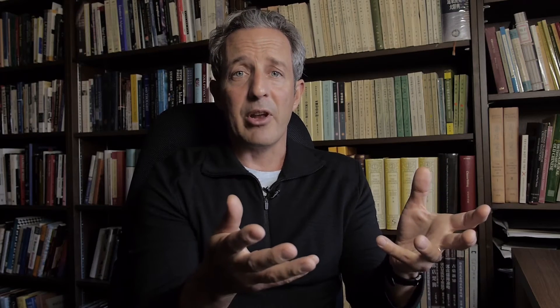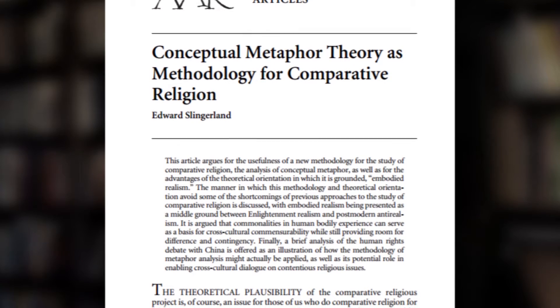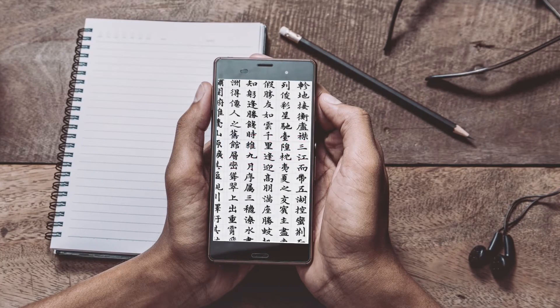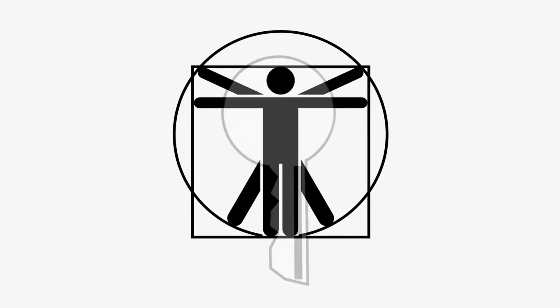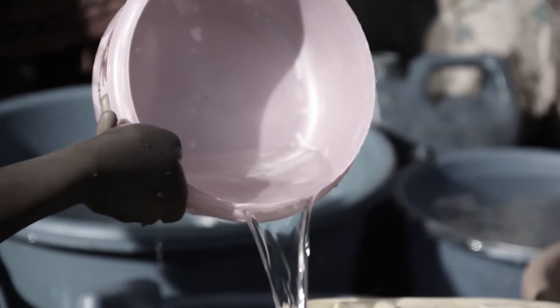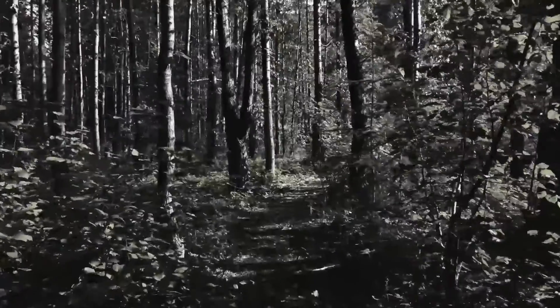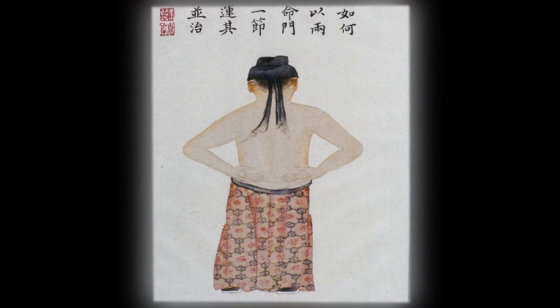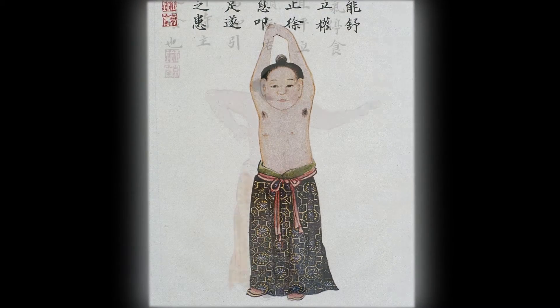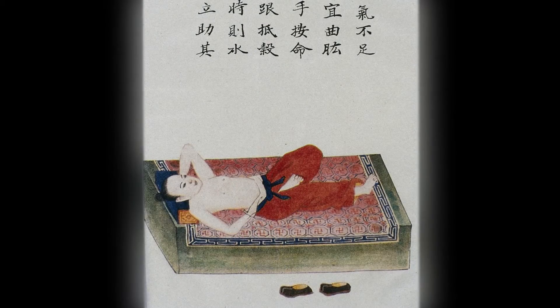I went on to argue that conceptual metaphor theory can be a way to do comparative work in religious studies. As a modern American, I can understand a classical Chinese text written in the 4th century BCE. Conceptual metaphor theory helps explain this: I can understand them because I'm using my body as a decoder key. When the text uses a metaphor of a container or a path, I know what that means because I've walked down paths and used containers. This embodied experience manifested in conceptual metaphors gives us a path into the minds of other peoples.